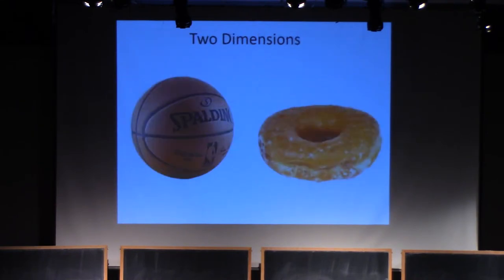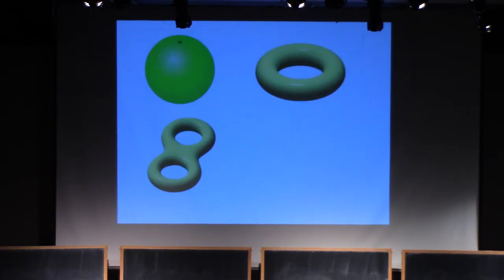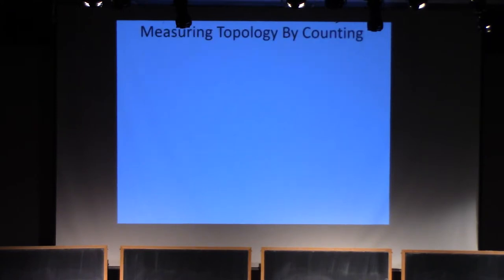Now let's go to two dimensions. We have the surface of a basketball and the surface of a donut, and it should be intuitively clear that those are topologically distinct. What else do we have? We can keep adding holes like that, and if we restrict to orientable surfaces, then that's a complete topological invariant. A theme of this talk is counting holes. You can measure topology by counting something. A complete topological invariant is counting holes, but there are other things you can count to measure topology.